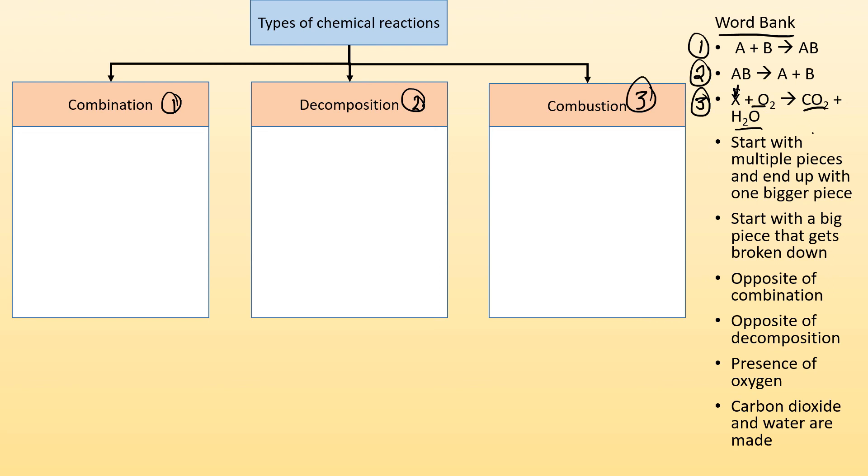Which one of these things start with multiple pieces and end up with one bigger piece? That's going to be combination reactions. Start with a big piece and it gets broken down? Decomposition reactions. Opposite of combination? That's decomposition. Opposite of decomposition is combination. Presence of oxygen? That's got to be combustion. And carbon dioxide and water are made? Also combustion.